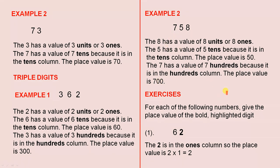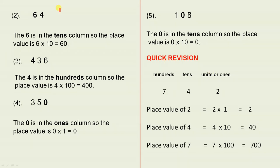For each of the following numbers, give the place value of the bold highlighted digit. In the first example, what is the place value of the 2? The 2 is in the ones column, so the place value is 2 times 1 equals 2, because it is in the right-hand column, which is the ones or units column. Next: sixty-four. The six is highlighted. The six is in the tens column, so the place value is 6 times 10 equals 60.